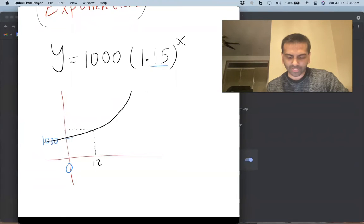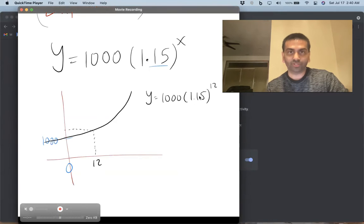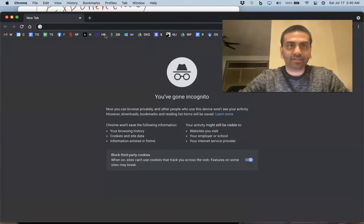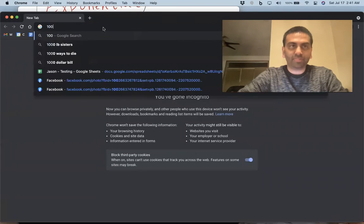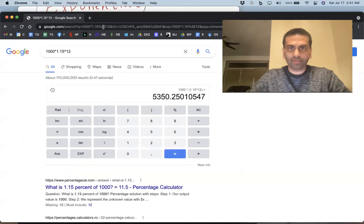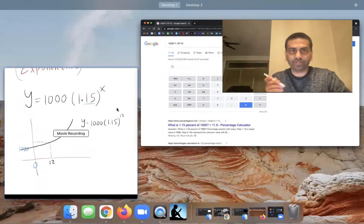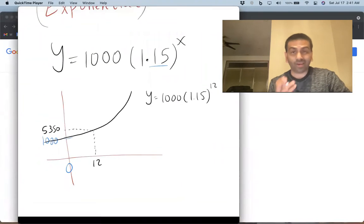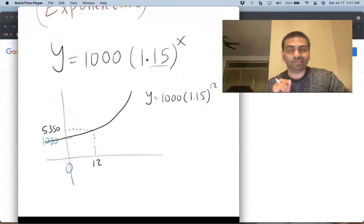So we can just plug that in here, whatever 1,000 times 1.15 to the 12th power is, right? Just replace x with 12. That would give you that answer. And you can just plug that into a calculator or Google, you could just type in 1,000 times 1.15 to the 12th power. And that's 5,350. So 5,350. So now we know how many COVID patients there were a year later.